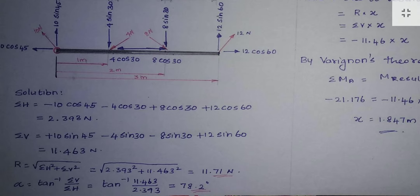The third force, 8 cos 30, is acting towards the right, so it is a positive value. And 12 cos 60 is also acting towards the right, so it is also positive. Adding these together, we get a positive value for sigma-H.